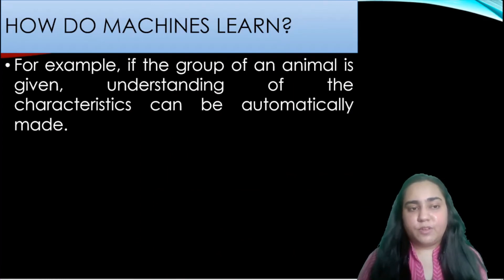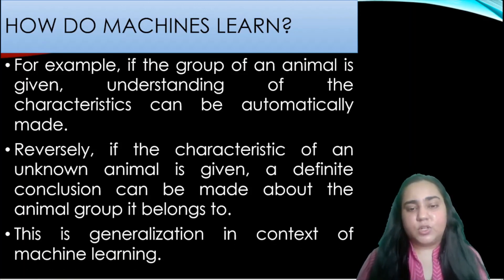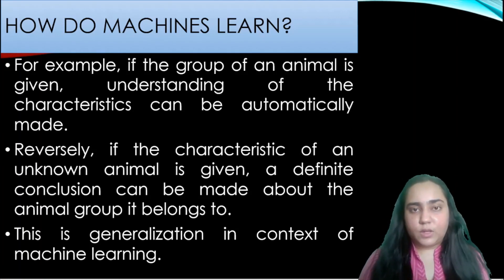In the end the abstracted mapping from the input data can be applied to make critical conclusions. For example if the group of an animal is given understanding of the characteristics can be automatically made. So if somebody tells you that frog is an amphibian it's very easy for you now to list out all the characteristics of a frog. And reversely if the characteristic of an unknown animal is given a definite conclusion can be made about the animal group it belongs to. So if you saw a frog you could list out the characteristics of the frog and you could find that this one belongs to the amphibian group because of all these characteristics. So it works both ways and this is generalization in context of machine learning. There is abstraction and there is generalization and we're going to see more about these things in the next video. Thank you for watching.